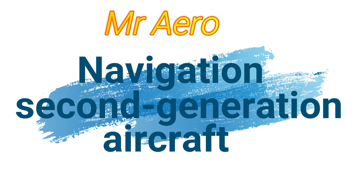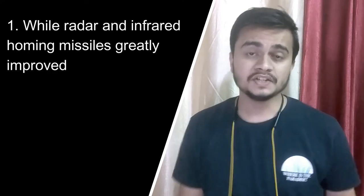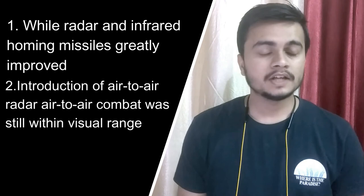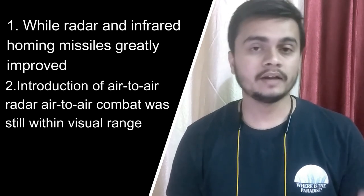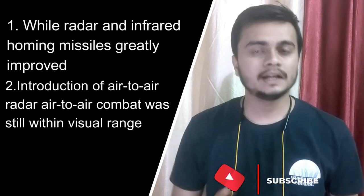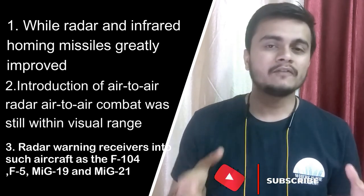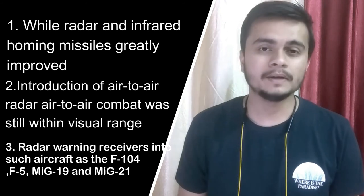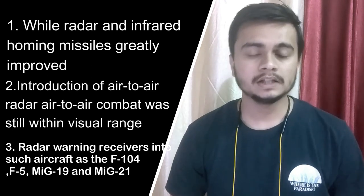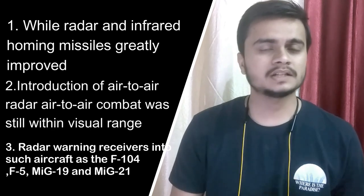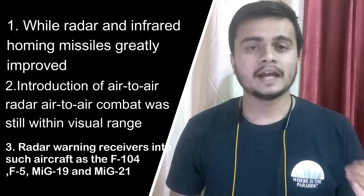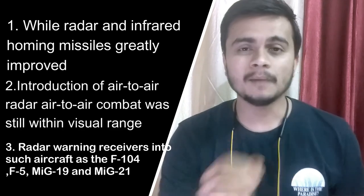2nd generation के navigation systems 1st generation से काफी improve हो चुके थे। Air-to-air combat के लिए air-to-air navigation system भी आ गया था, लेकिन यह visual range तक ही track कर सकता था। Daytime में यह ज्यादा effective नहीं था, लेकिन night time और foggy weather में यह काफी effective था। 2nd generation aircraft में radar warning system भी लगाए गए थे जो incoming missiles को track कर सकते थे — यह system F-104, F-5, MiG-19 और MiG-21 जैसे major planes में था।